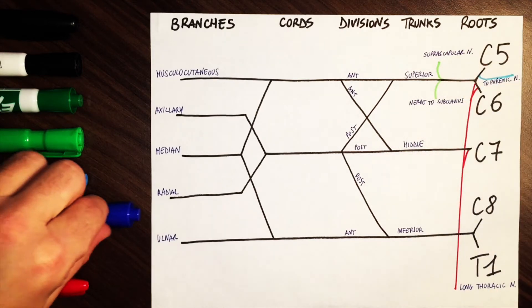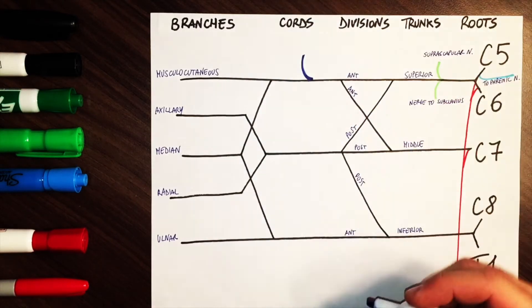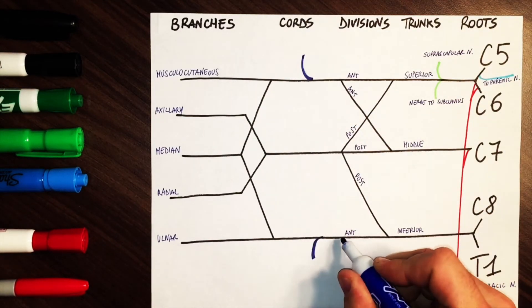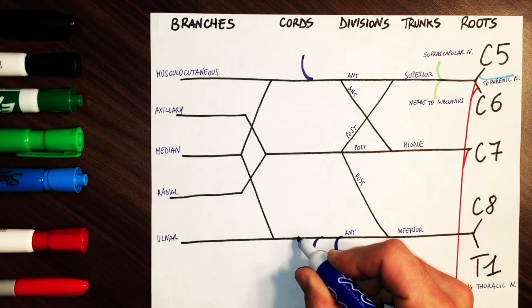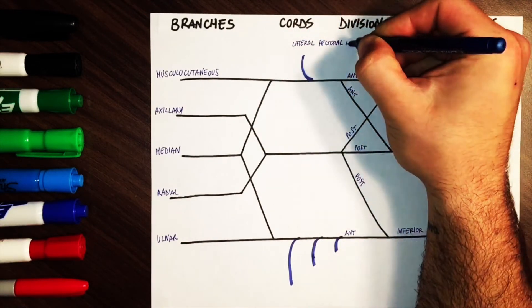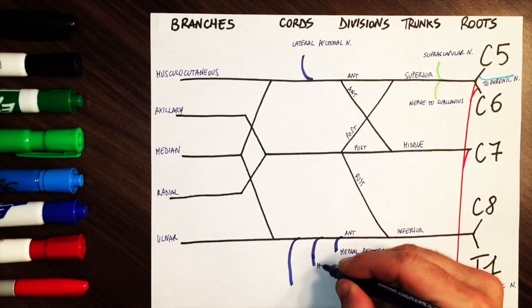All the next branches come from the cord segment. The lateral pectoral nerve from the lateral cord, and on the opposite side from the medial cord, we have the medial pectoral nerve and the medial brachial nerve.